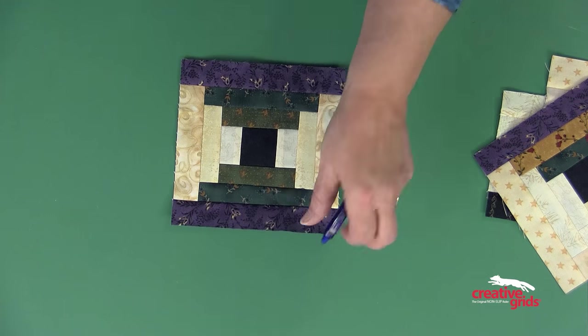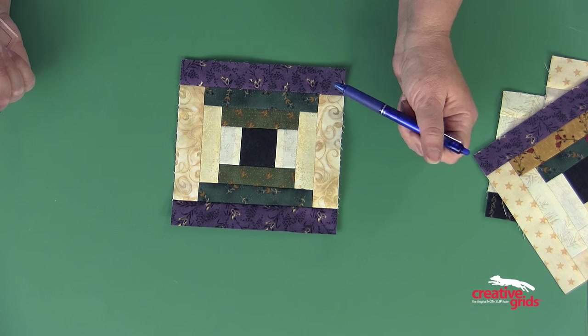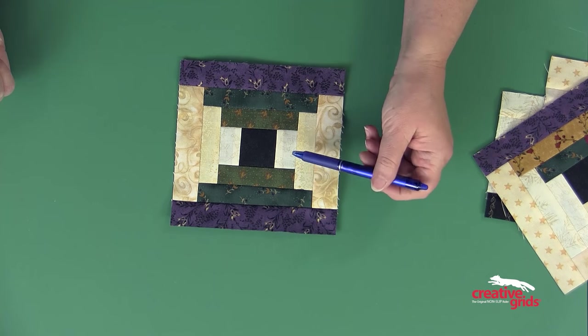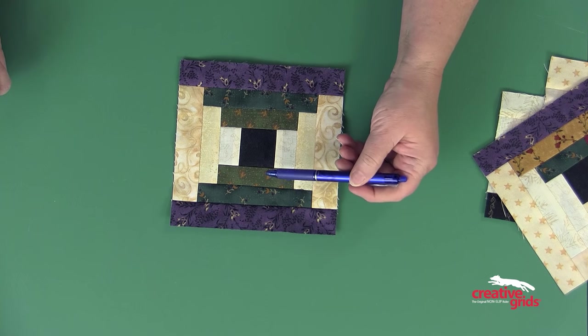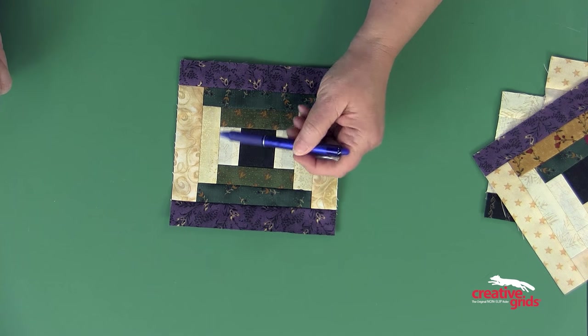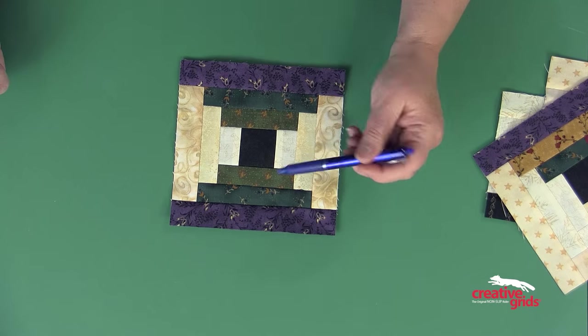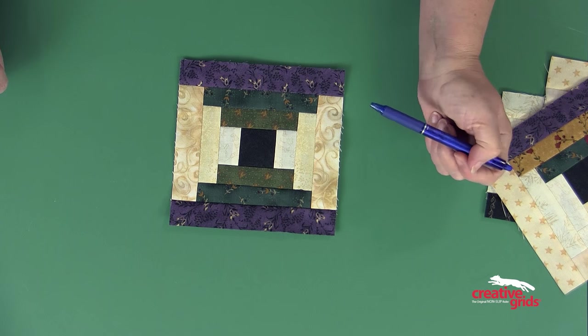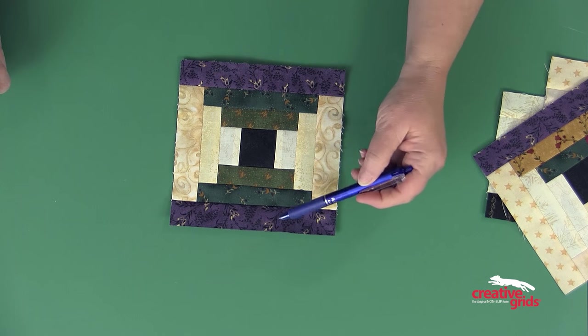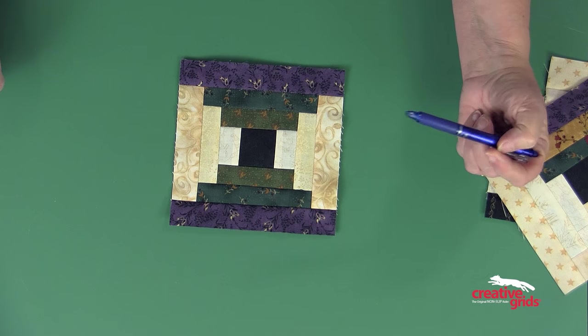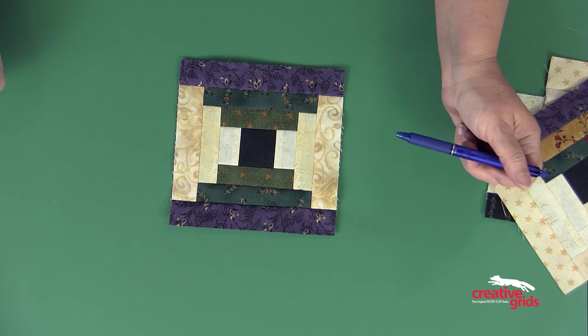I can also do a courthouse steps. A courthouse steps is trimmed just like the log cabin, except this time I'm adding two lights to opposite sides and two darks. That is round one. When I add my second light and second dark, that is round two. My third light and third dark would be round three, and that completes my courthouse steps block.